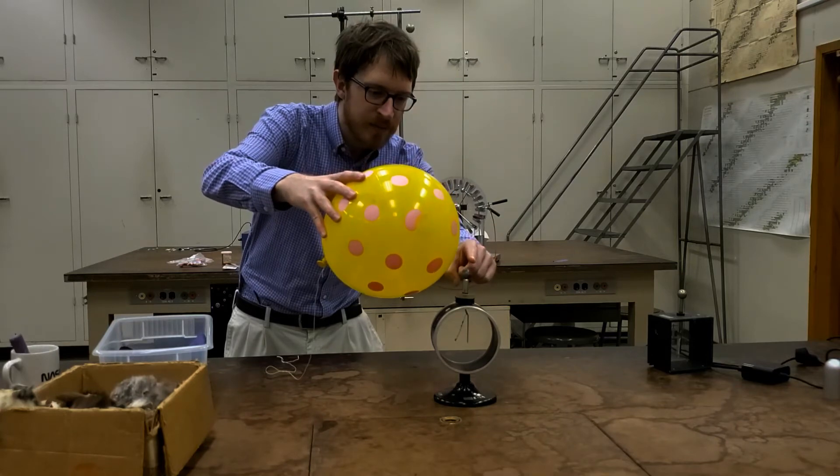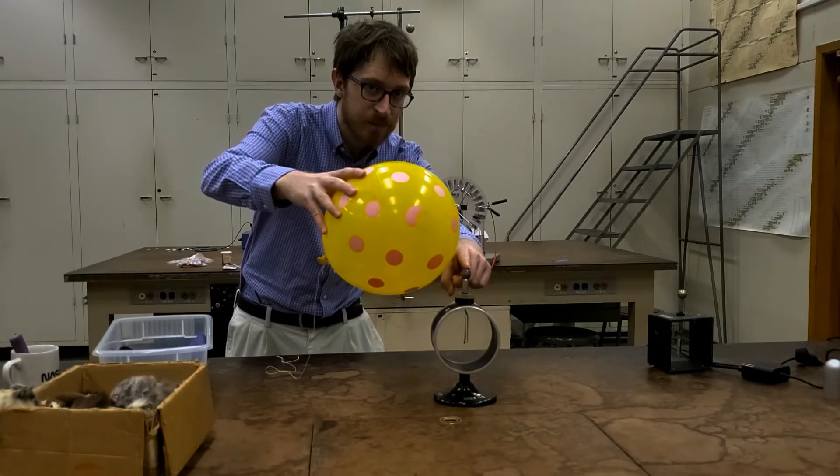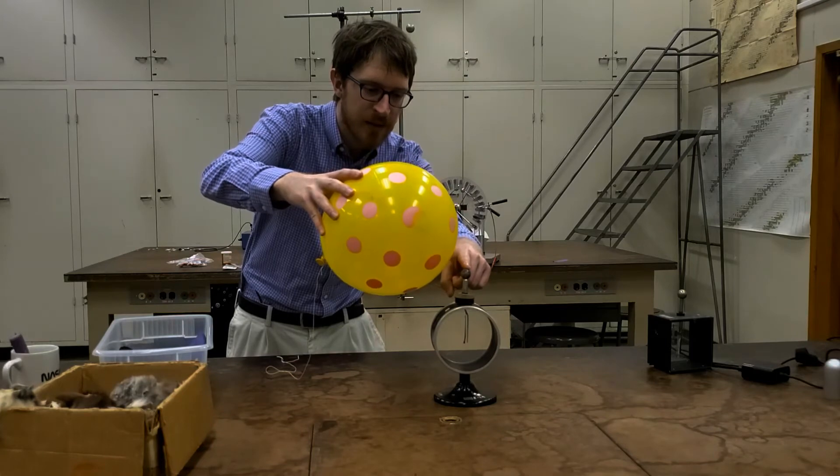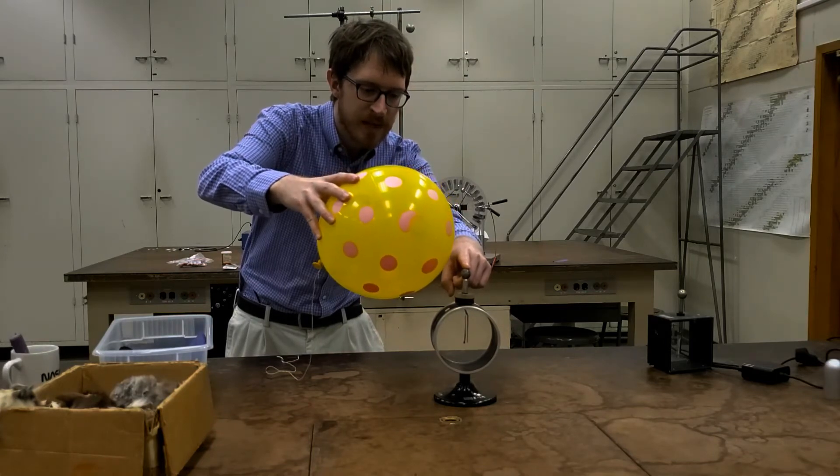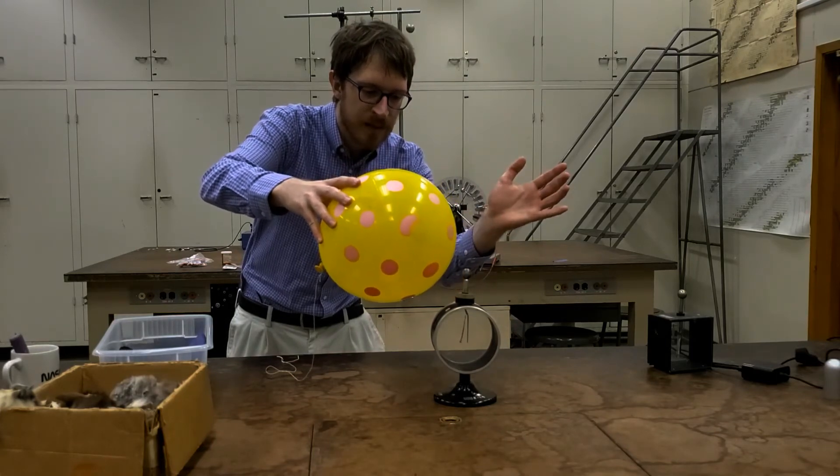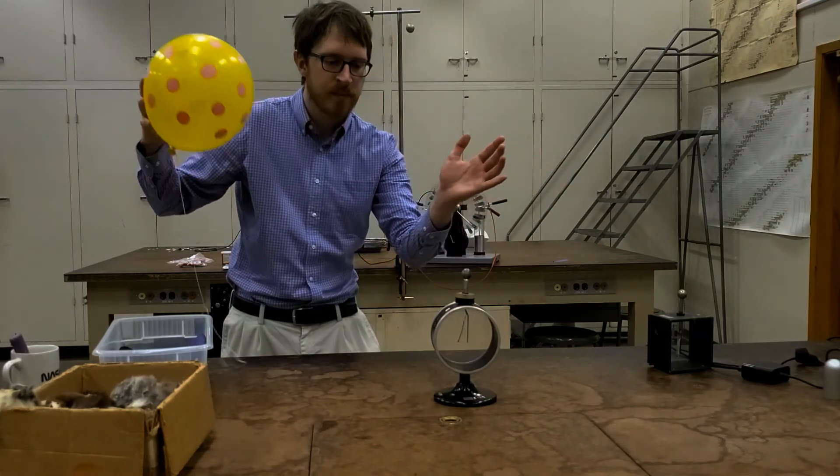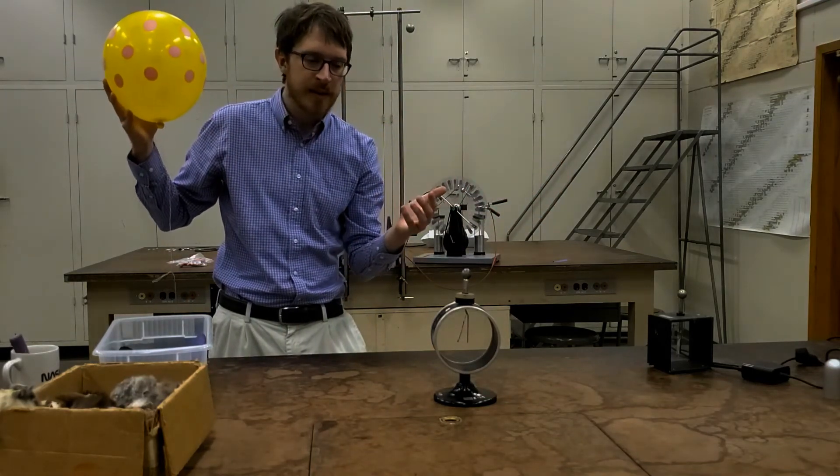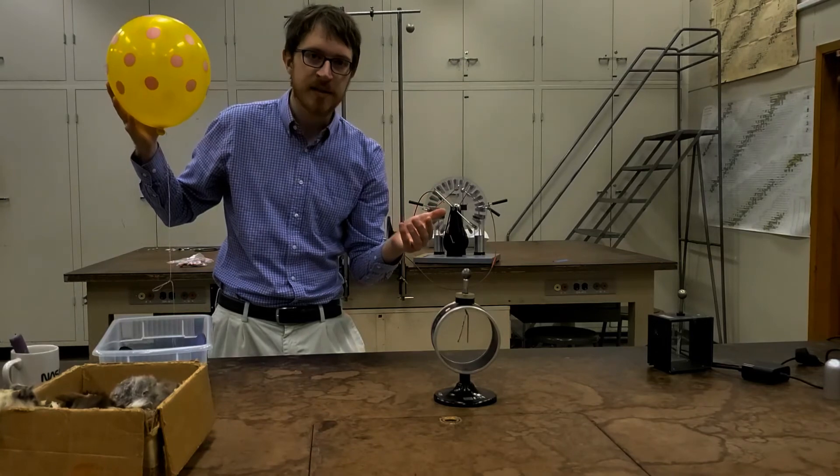I'm going to briefly touch the electroscope with my finger. You can see that the leaves have come together. I'm going to take my finger away, I'm going to take the balloon away, and now the balloon is gone, but the leaves are still separated.